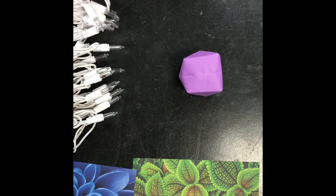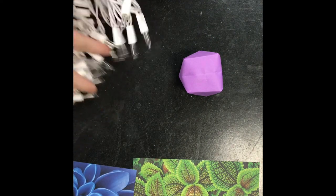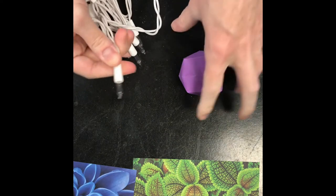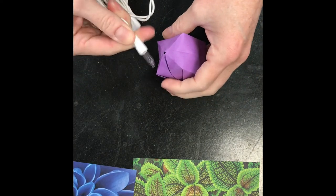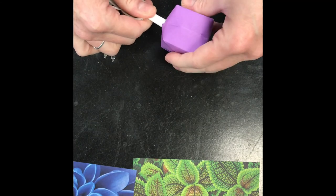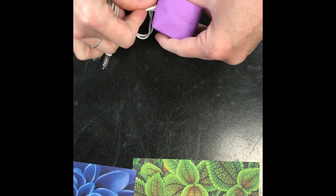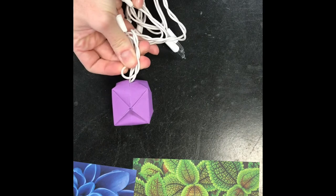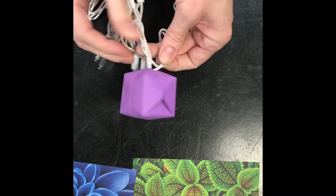So once you have your boxes inflated, you should be able to take one of those lights, and it should pretty easily go right inside. You want to go all the way past the light, past the white plastic, because that's what will make sure that it stays on that string of lights for you.